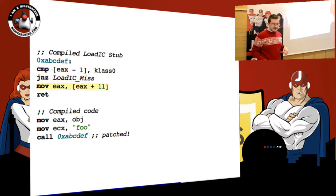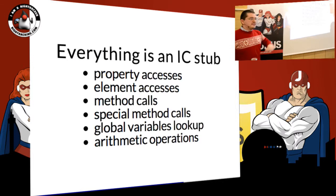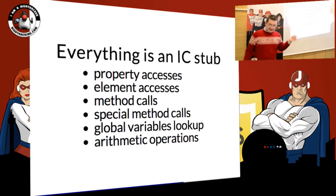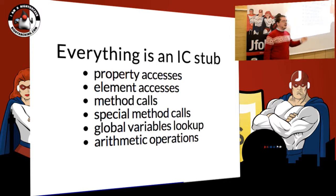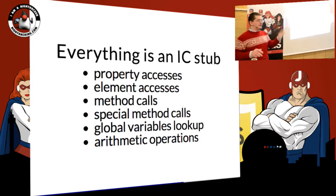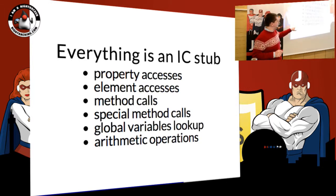We generate this small stub which checks the hidden class — if the hidden class doesn't match, it goes to the miss; otherwise, it just loads from a fixed offset. This is how hidden classes and inline caching work together in V8. The fallacy here is that if you only have the inline cache, you try to speed up everything by doing inline caches. V8 ended up with tons of different inline caches and inline cache stubs, all written by hand in assembly for at least three or four platforms — a lot of exciting code with bugs different on different platforms.